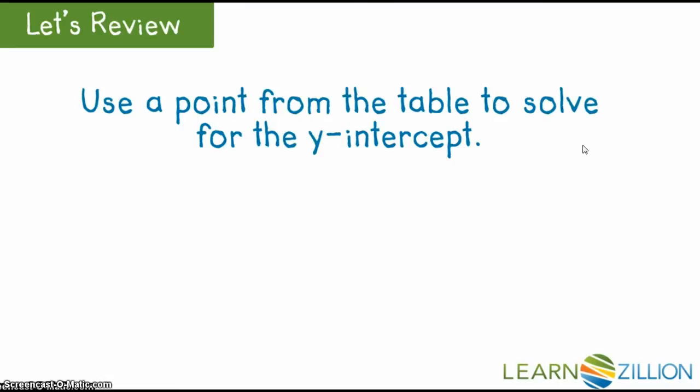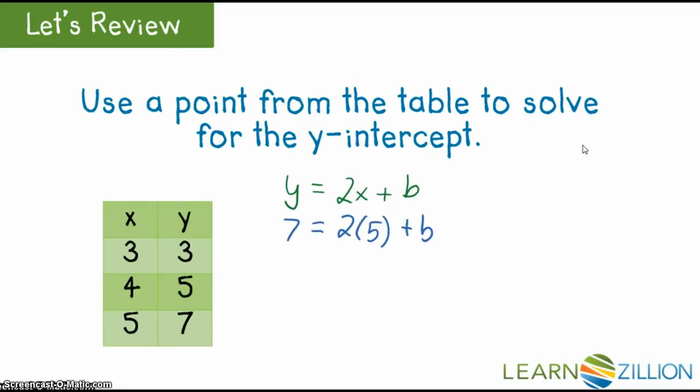Once you have found the slope or rate of change, you can use a point from the table and the slope-intercept form of the equation to solve for the y-intercept and write the equation. Here we have chosen to use the point to solve for b, which equals negative 3, and then written the equation.